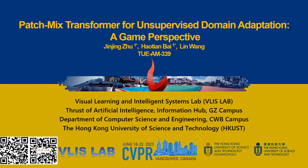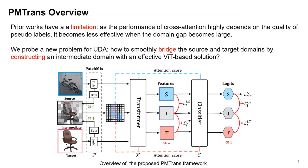I'm Zhu Jinjin from VDS Lab, Hong Kong USD, Guangzhou. I will present our CVPR 2023 paper, PatchMix Transformers for Unsupervised Domain Adaptation: A Game Perspective. We want to address the limitation of previous works. As the performance of cross-attention highly depends on the quality of pseudo-labels, it becomes less effective when the domain gap becomes large. Therefore, we propose a new problem: how to smoothly bridge the source and target domains by constructing an intermediate domain with an effective solution. The implication is that compared to direct domain alignment, decreasing the domain gap between the intermediate and source or target domains can facilitate the domain alignment. Therefore, we propose a novel and effective method called PatchMix.